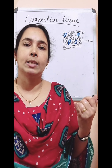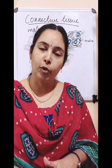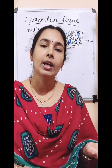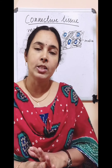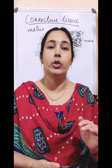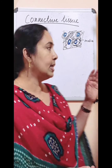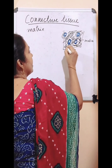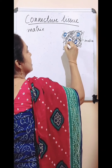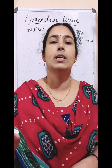In bone, we can see the matrix is solid. In blood, we can see the matrix is fluid. So the nature of the matrix varies based on the function of the connective tissue. This is called intercellular matrix — intercellular means the matrix present in between the cells, since 'inter' means between.